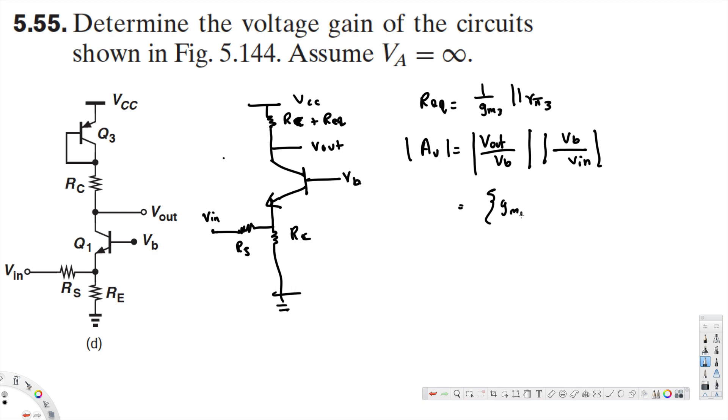GM1 times (RC plus 1 over GM3 parallel RO3), times RE parallel 1 over GM1, divided by RS plus (RE parallel 1 over GM1).